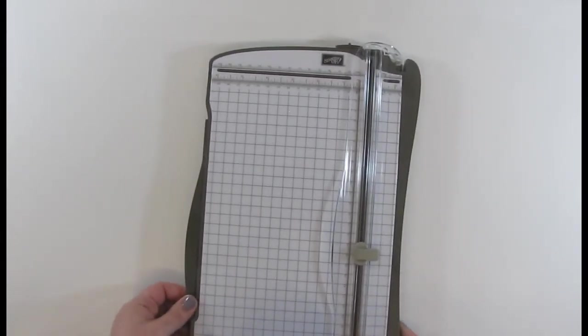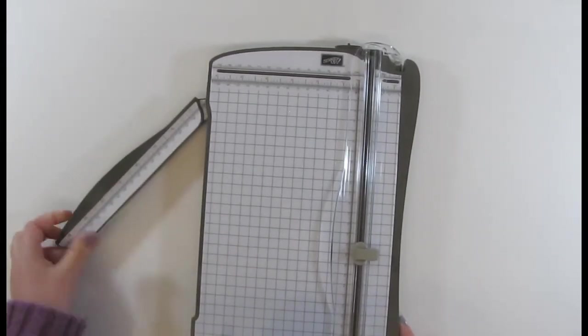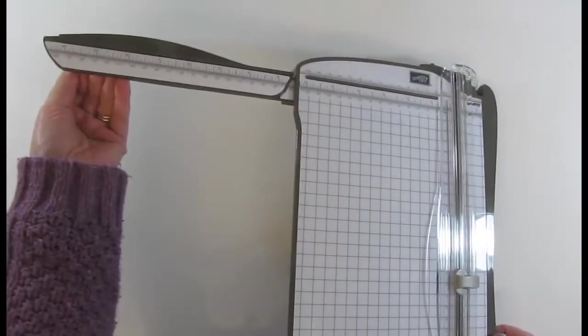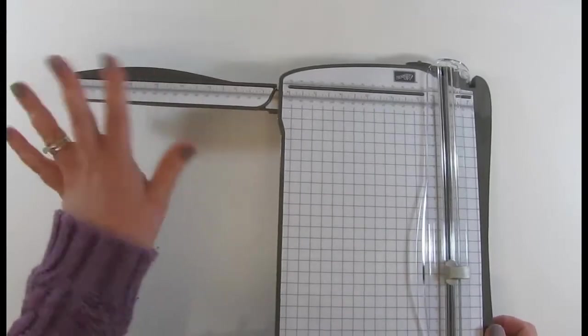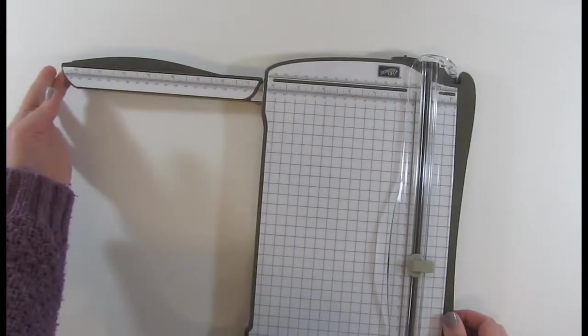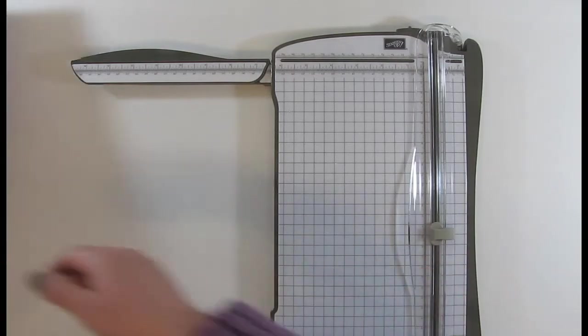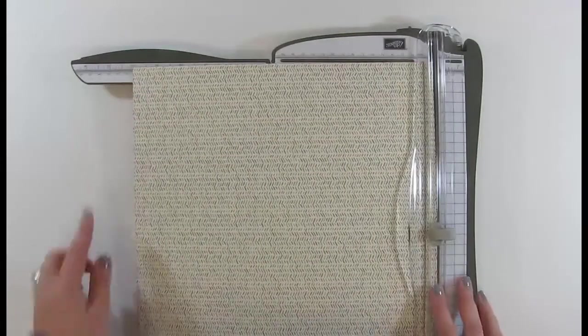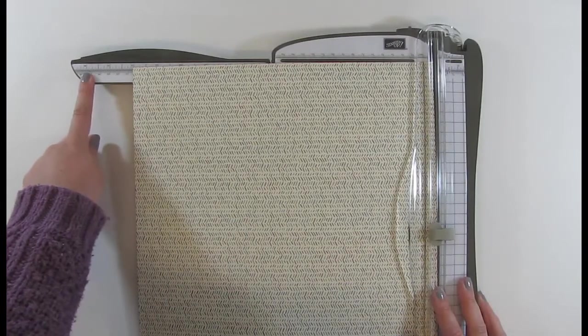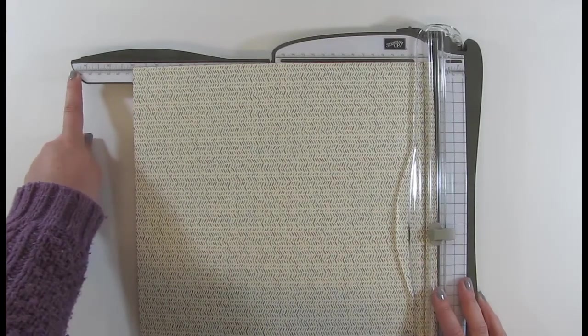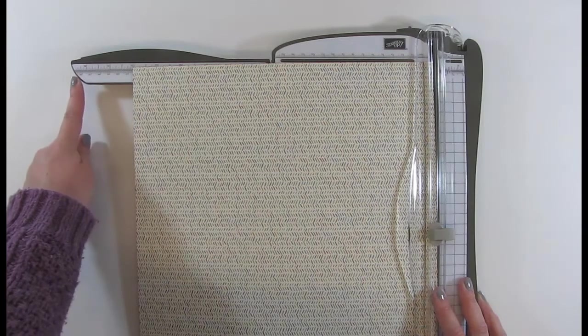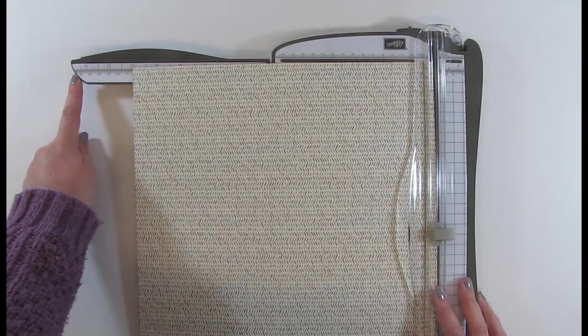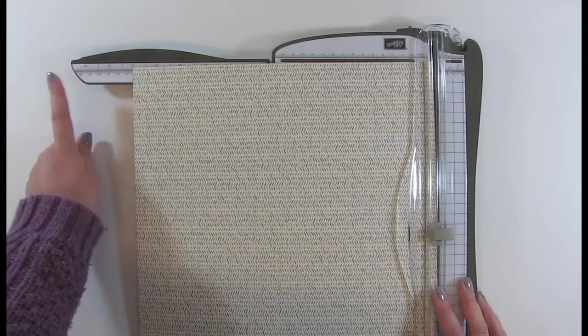You have an arm that flips out to the side here and it will click and it also has a little foot just to balance your trimmer. So I'll just bring that 12x12 paper back in again so you can see how big it is. The inches got to just 14 and a half there or just over 36.2cm.